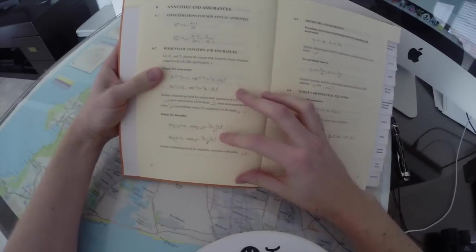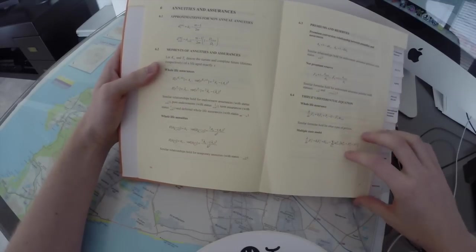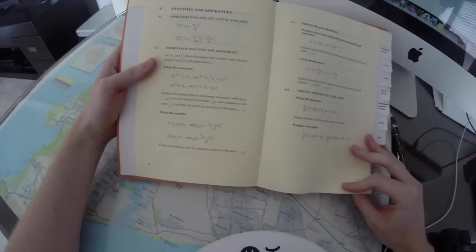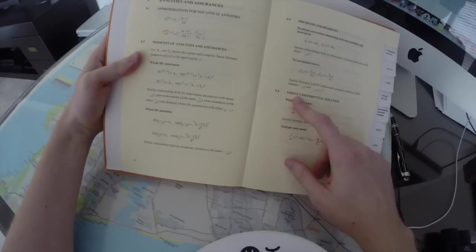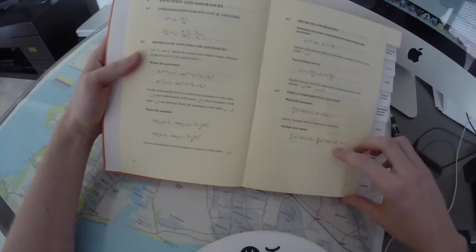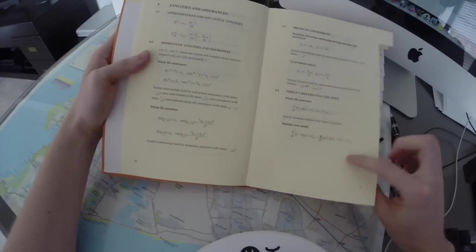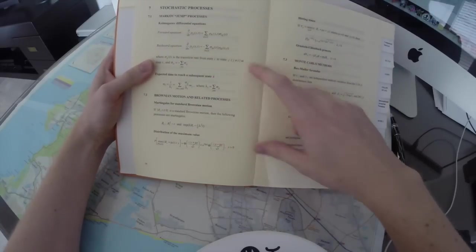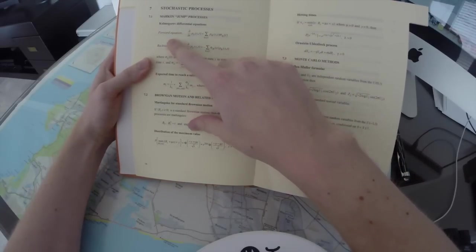Then we also have annuities, annuities and assurances, we have the moments, the whole life assurance, premiums and reserves, Thiele's, I don't know how you say that, we call it Thiele's differential equation, multi-state models, there's lots of models. Markov jump processes, Kolmogorov comes up again, forward and backwards equations.